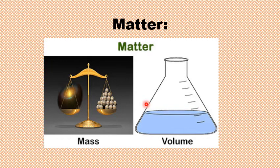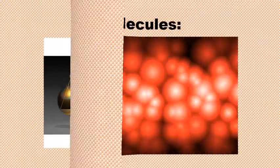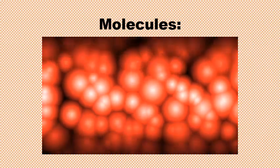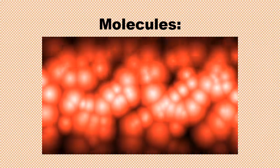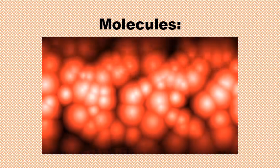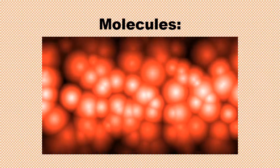Almost everything around us is matter. Matter is made up of tiny particles. These particles are much smaller than a millionth part of a grain such as wheat. We cannot see them because of their tiny size. These tiny particles are called molecules. They are so small that we cannot see them.